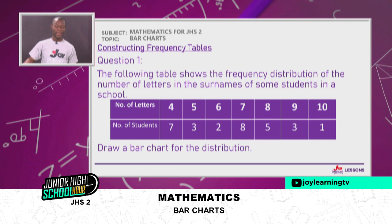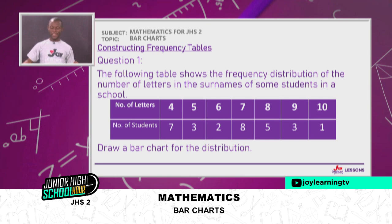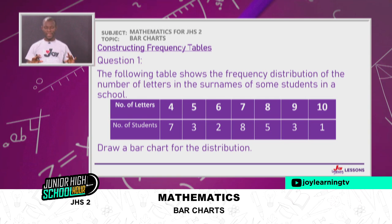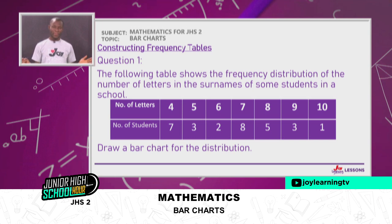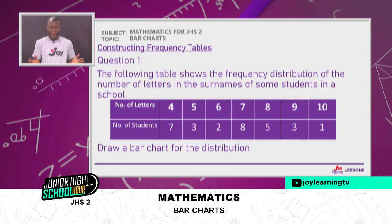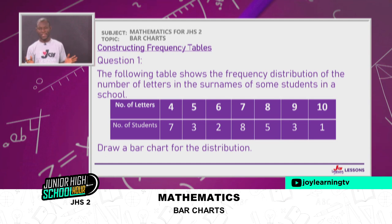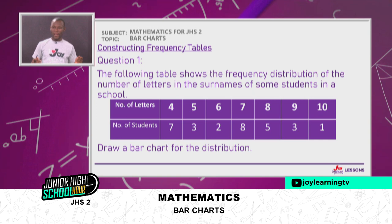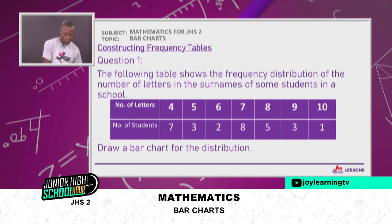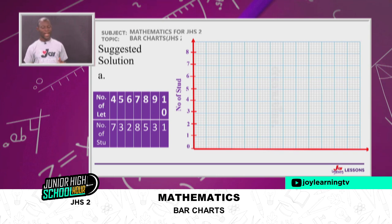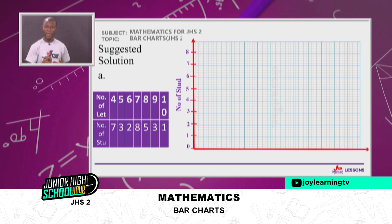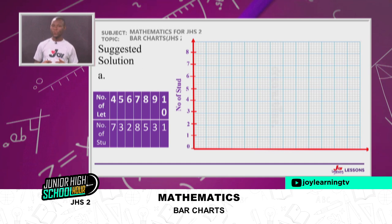Let's take the first question and look at it carefully. 'The following table shows the frequency distribution of the number of letters in the surnames of some students in the school.' That's the table presented. Our simple task is to draw a bar chart for the distribution. Take note of the table — you can take a screenshot of it.